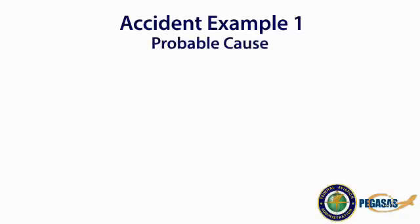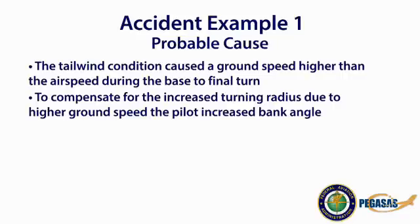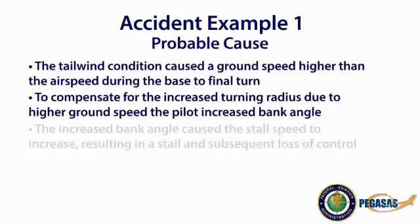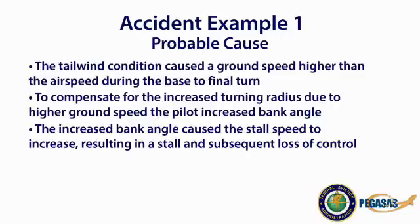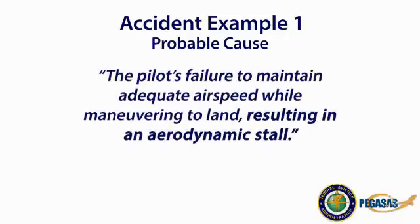During the evaluation, the NTSB determined the probable cause to be the tailwind condition, which caused a ground speed higher than the airspeed during the base to final turn. To compensate for the increased turning radius due to the higher ground speed, the pilot increased the bank angle. The increased bank angle caused the stall speed to increase, resulting in a stall and subsequent loss of control. The NTSB determined the probable cause to be the pilot's failure to maintain adequate airspeed while maneuvering to land, resulting in an aerodynamic stall.